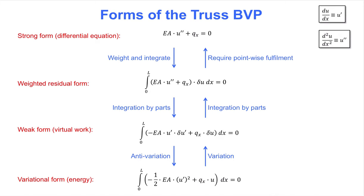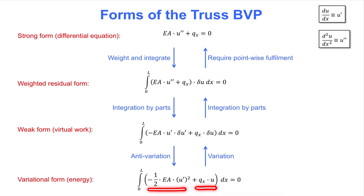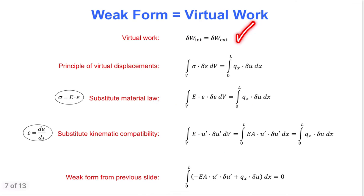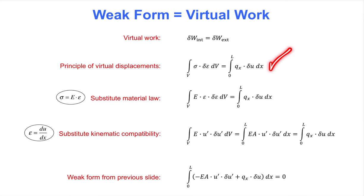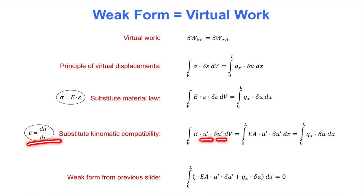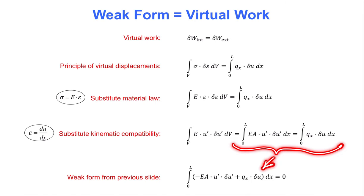But first, we observe the variational form at the bottom of the slide, obtained by anti-variation, but which can also be established by adding strain energy and potential energy. The next slide starts with the principle of virtual work — specifically the principle of virtual displacements. Notice the volume integral of real stress times virtual strain on the left-hand side, and the integral of real load times virtual displacement on the right-hand side. Next, we substitute material law for sigma, and thereafter we substitute kinematic compatibility for both the real strain and the virtual strain. If we compare the result with the weak form from the previous slide, we see that the expressions are identical. This proves that the weak form is actually the virtual work form.